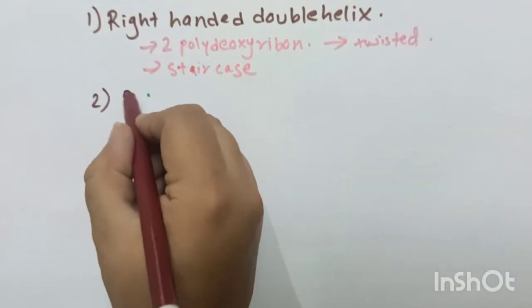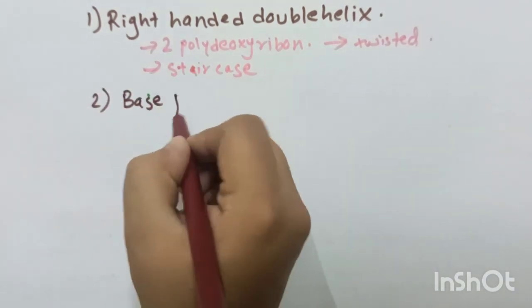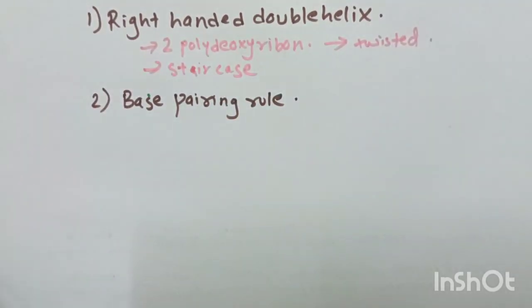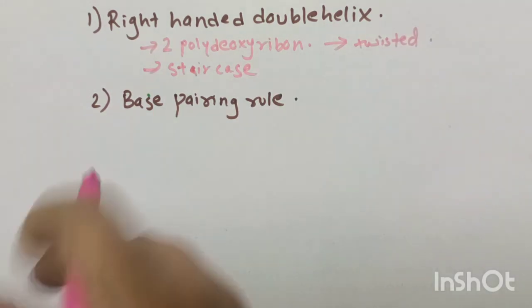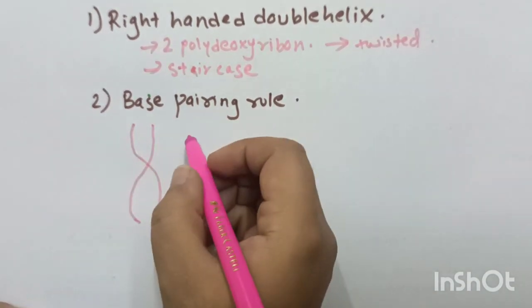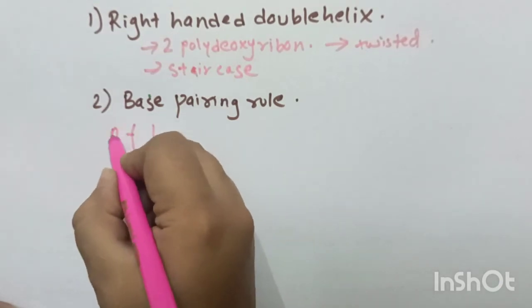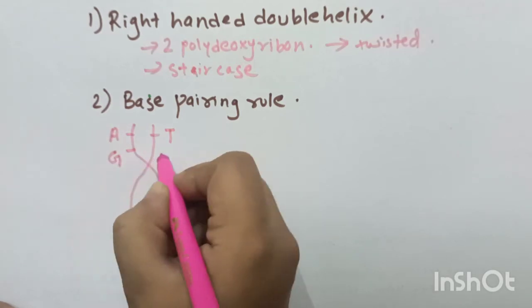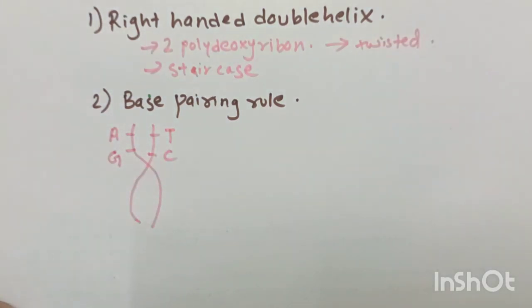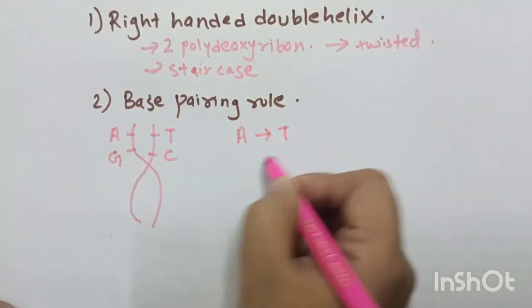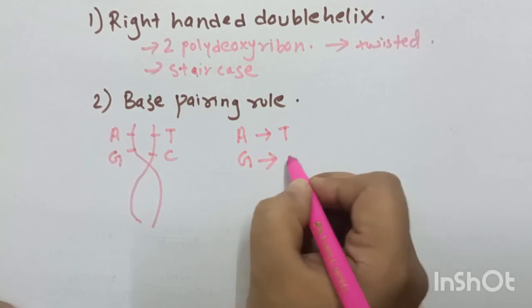Number 2 is the base pairing rule. The 2 DNA strands are complementary to each other. That means, if here it is adenine, it pairs with thymine. If here it is guanine, it pairs with cytosine. The base pairing rule says adenine pairs with thymine and guanine pairs with cytosine.